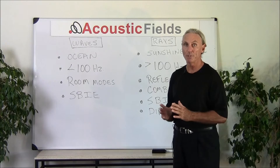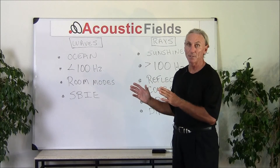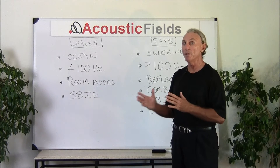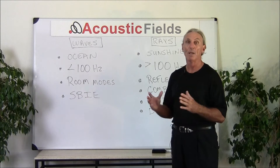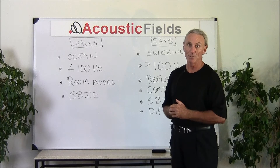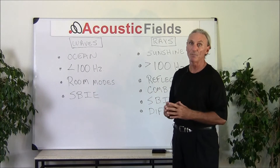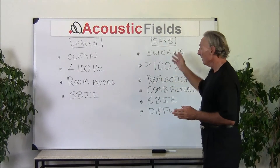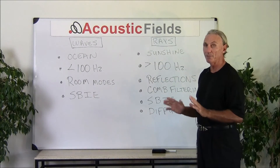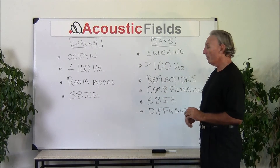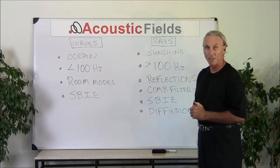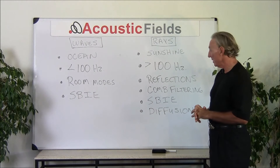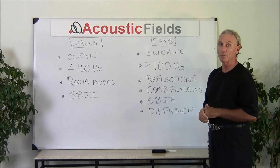These all produce sound. The only thing we want producing sound is the speakers and our source. Obviously the room is going to contribute, but we need to know when the room is making its own sound and when the speaker is making its own sound. So by studying these different ideas and breakdowns we can do that. Rays are much shorter wavelengths — smaller, greater than 100 cycles. They contribute to the reflections in our room, and they also contribute to comb filtering, SBIR, and poor diffusion.